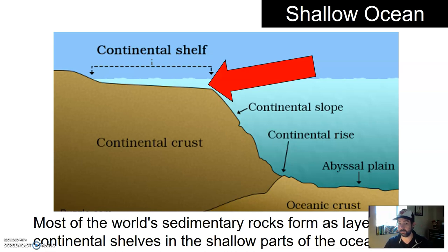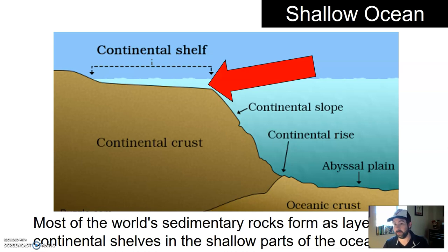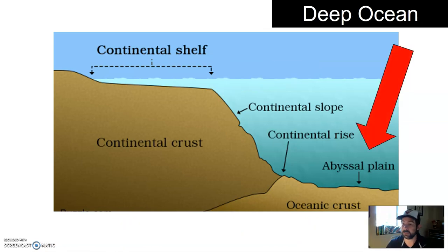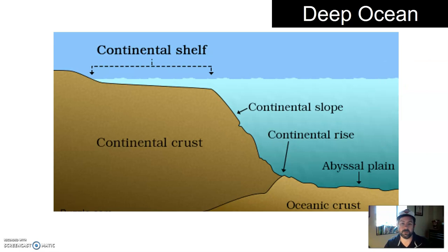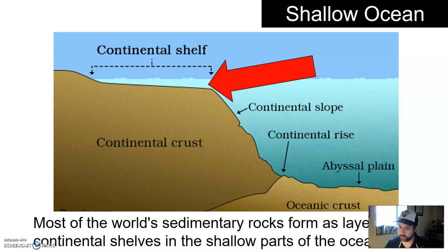Quite often, the shallow ocean is a place where a lot of sediment collects, and over time when you turn that sediment into sedimentary rocks — which we'll talk about in another section — this is where it occurs. You do get some sediment deposited in the deep ocean, but much less than in the shallow parts.